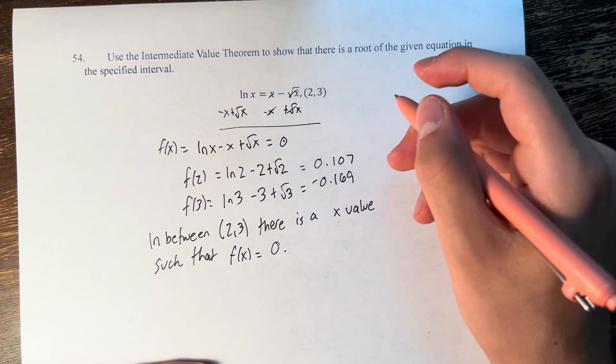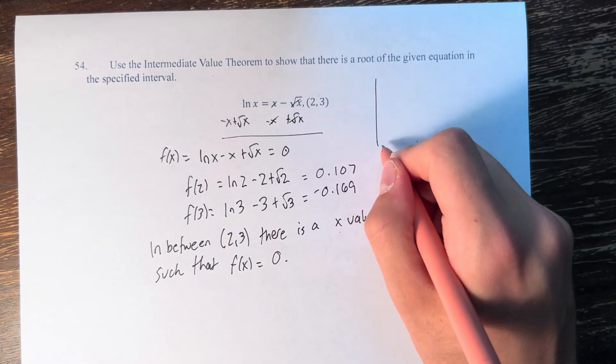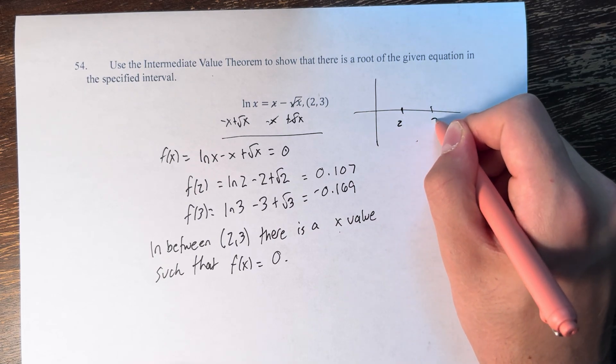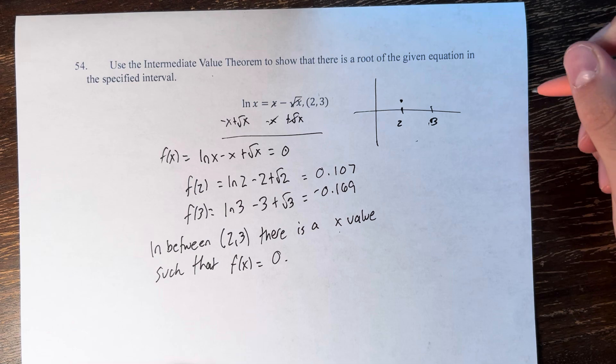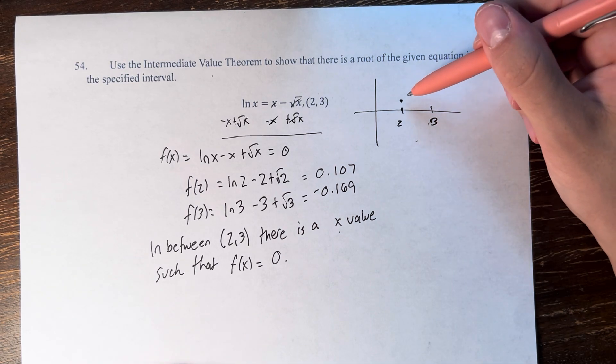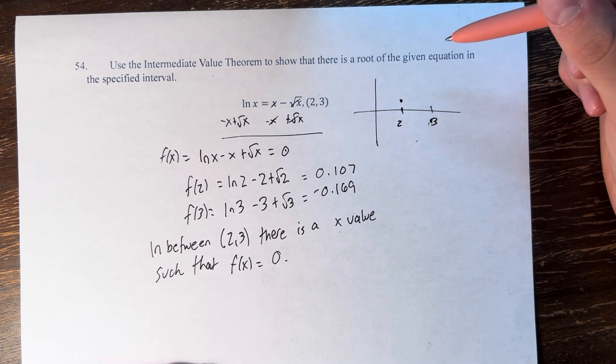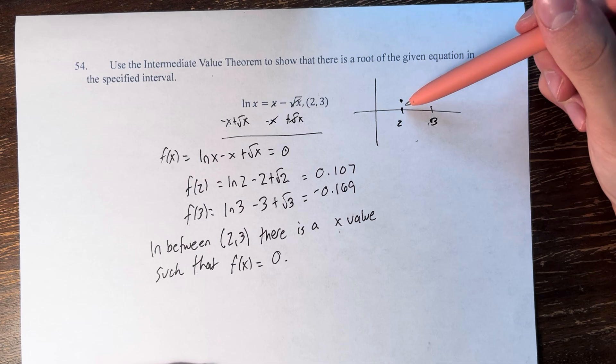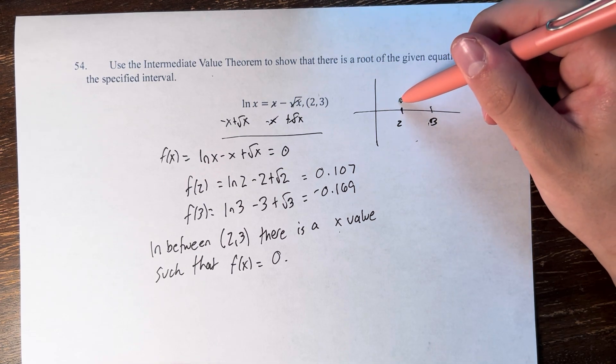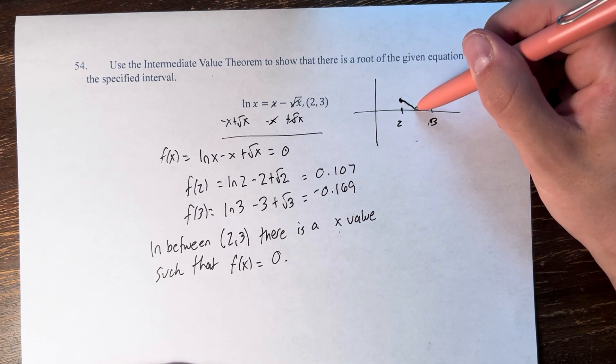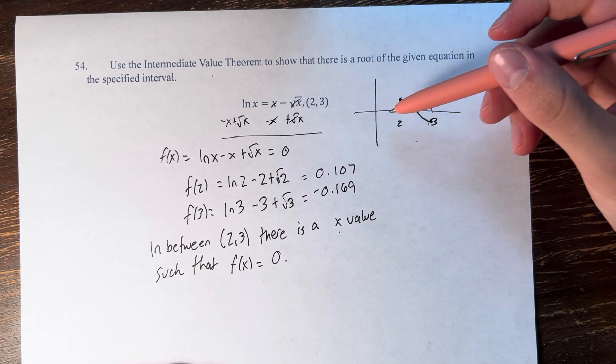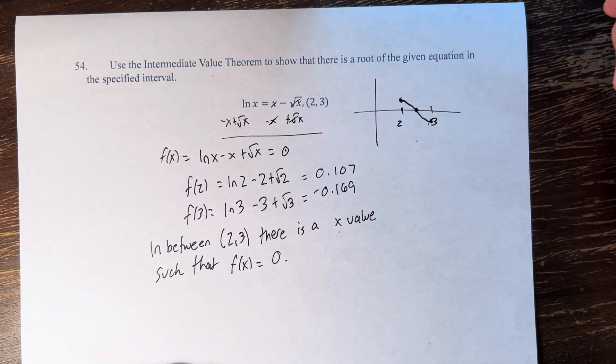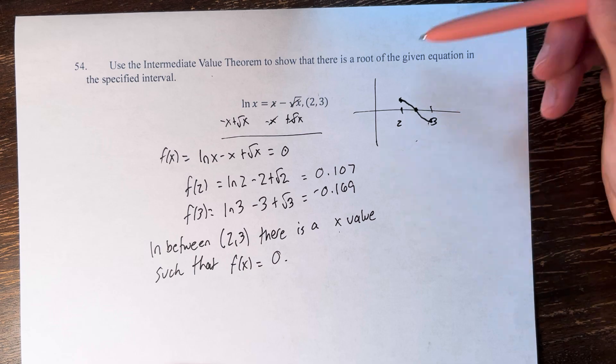We know this because, graphing briefly, f(2) is slightly above 0 and f(3) is slightly below 0. If the function is continuous, then by the Intermediate Value Theorem, it must hit every y value between here and here on the way down. Therefore, at some point, it must intersect with the y-axis. If it's continuous, you can't jump over or skip it entirely.